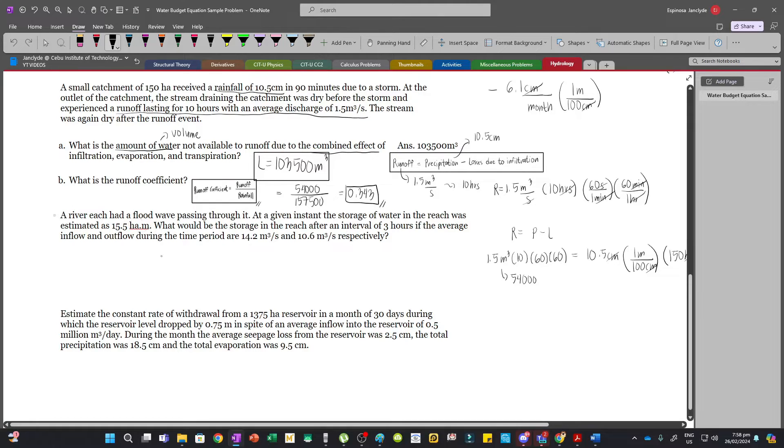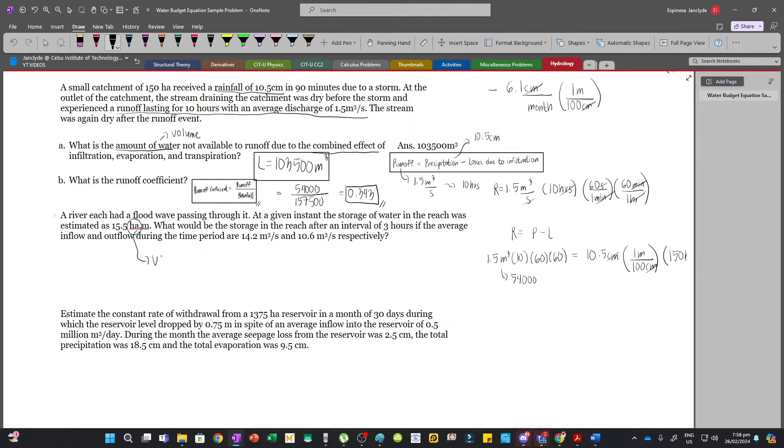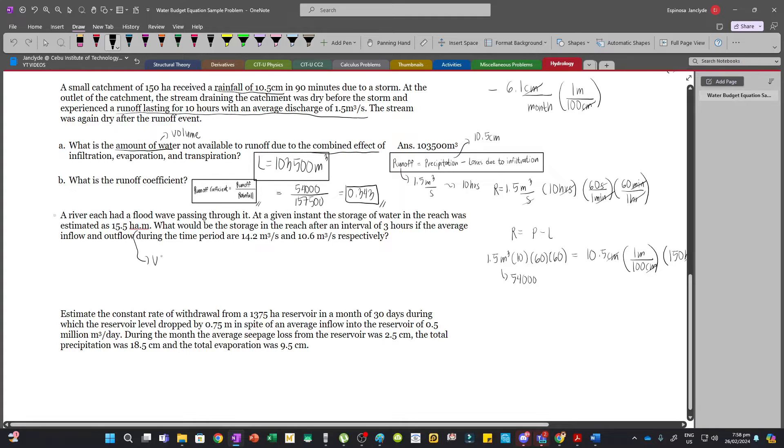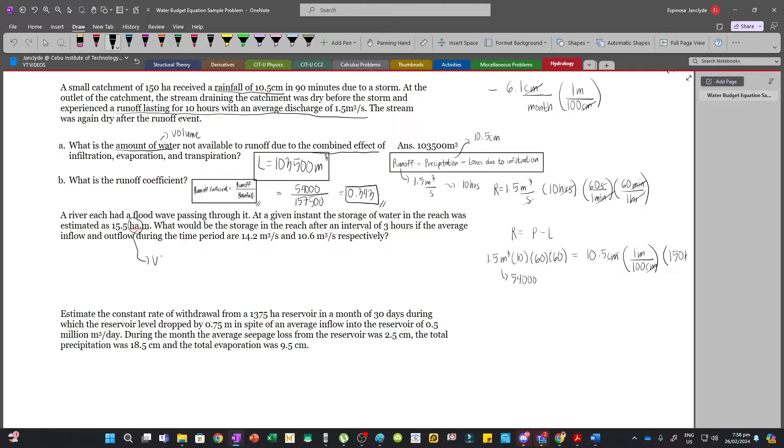Now, what do you mean by hectare meter? This is just essentially the volume because hectare is a unit of area and then meter is a unit of distance. However, we first need to convert hectare into m squared so that we can get the volume.